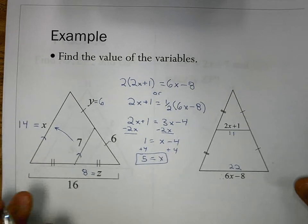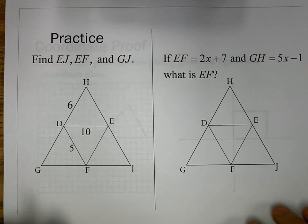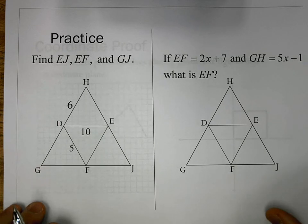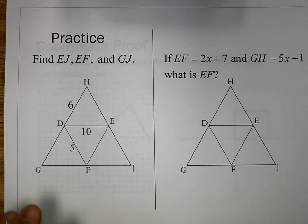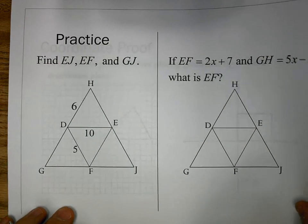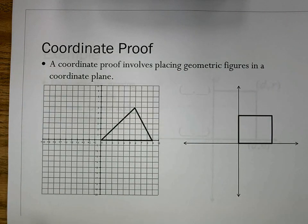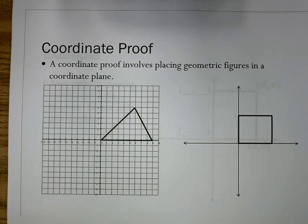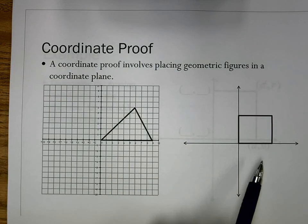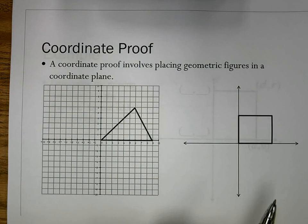We also have some practice problems listed — you're going to try those on your own; they're also on your packet and we'll come back to those. But before we get to that practice, we're going to jump to the second part of this section, which is coordinate proof. Coordinate proof is a proof that involves placing geometric figures in a coordinate plane. So instead of just having a shape floating through space, we're now giving it a grid — an exact graph, or maybe just axes where we treat values as variables.